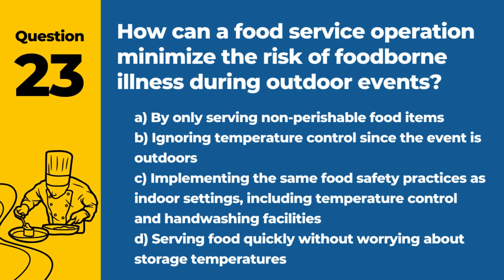Question 23. How can a food service operation minimize the risk of foodborne illness during outdoor events? The answer is C: Implementing the same food safety practices as indoor settings, including temperature control and hand-washing facilities. Outdoor events require careful planning to ensure food safety standards are met.